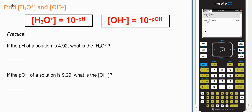So let's do some calculations with turning things back into concentration from pH and from pOH. So first, if the pH of a solution is 4.92, what is hydronium concentration? Well, I know if I do 10 to the negative 4.92, I should get that value. So let's do that, 10 to the negative 4.92, and then we get 1.2 times 10^-5.